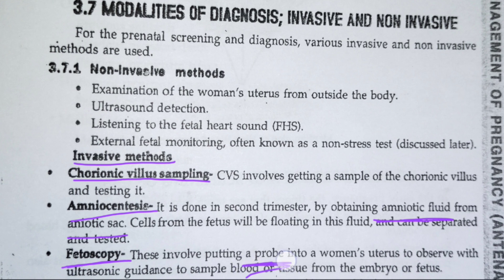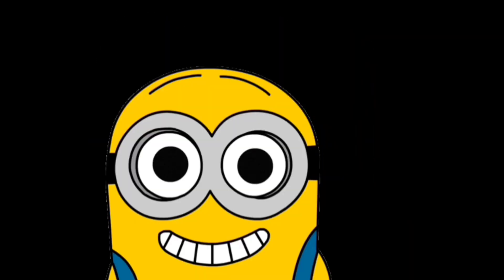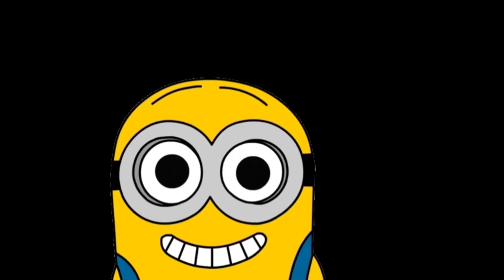Next is fetoscopy. Fetoscopy involves a probe which is inserted into the uterus — it is rod-like in shape — to observe whether the uterus is in proper condition, whether it has enough blood, whether it is healthy, and whether there is any damage that can be seen in the embryo. Everything can be observed. This is an invasive method.